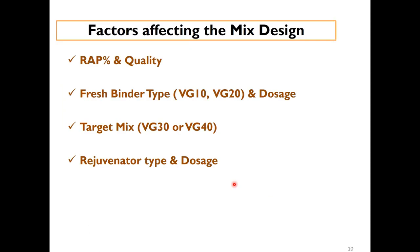Factors which affect the mix design include the percentage of RAP and quality of the RAP — which is extremely important — the type of fresh binder (whether VG10 or VG20) and its amount, what is the target mix (whether you are targeting VG30 or VG40 binder), and the rejuvenator type and its dose.